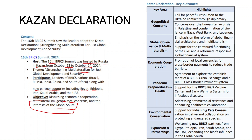Key areas the 16th BRICS Summit focused on included geopolitical concerns — the Ukraine conflict and the Gaza, West Bank, and Lebanon conflicts took center stage. Global governance and multilateralism were supported, including continued functioning of the G20. Economic cooperation was given priority with promotion of local currencies and cross-border payments. Pandemic preparedness, health, and a BRICS cross-border payment system were also discussed.